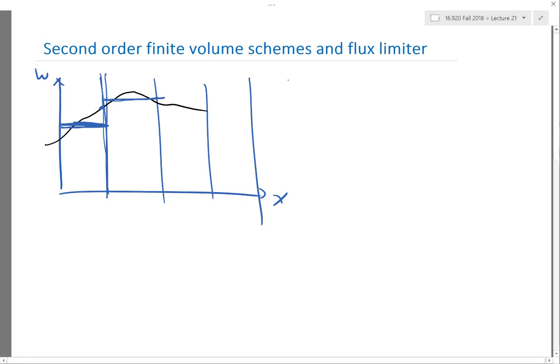So basically if you do a Taylor series analysis, you can find out that the value of the function at X_i+1/2 minus the cell average is on the order of delta X.